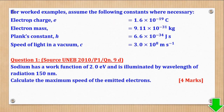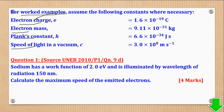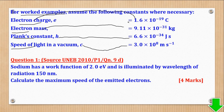In the worked examples, the constants will always be given in the question. Electronic charge has that value, electron mass has that value, Planck's constant has that value, and speed of light in vacuum has that value. These constants are vital and will help us more in the calculations.